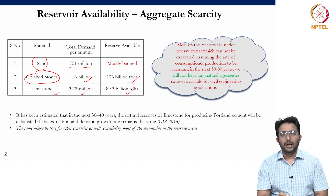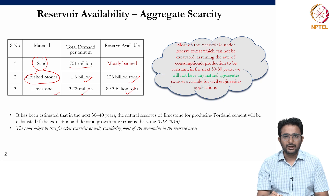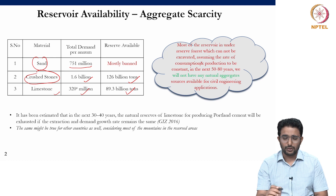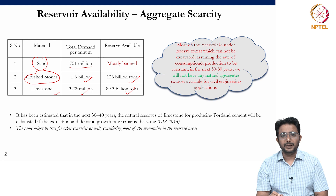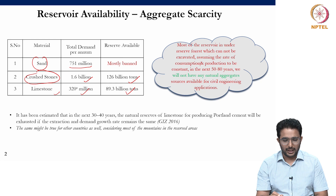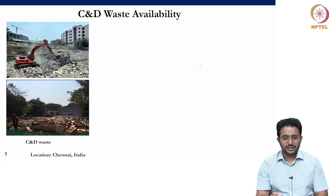If we keep the rate of production and consumption of these materials constant for the next 30 to 80 years, we will see that after at most 80 years there will be no reservoir available for natural aggregate. This means it is the right time to look for alternative supply, and one of the promising alternatives that can be used in the construction industry is C&D waste — where C stands for construction and D stands for demolition.